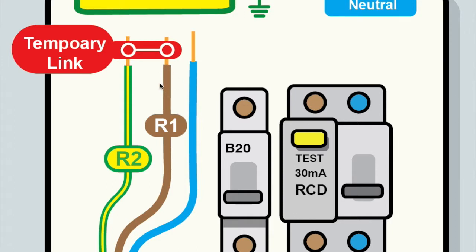You can see here the temporary link where we've linked together the CPC and the line conductor to enable our testing. When we're testing we give these conductors a name. The CPC is known as the R2, the line conductor is known as the R1.